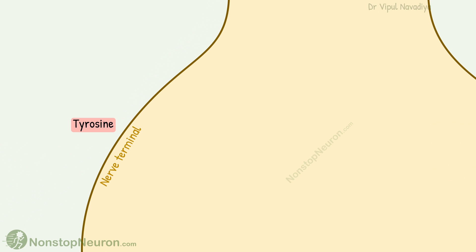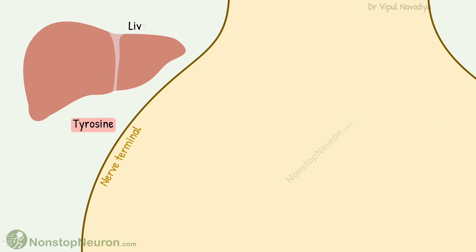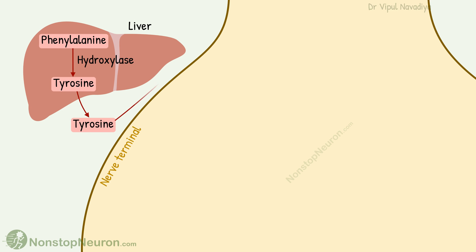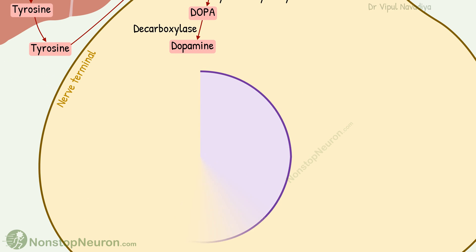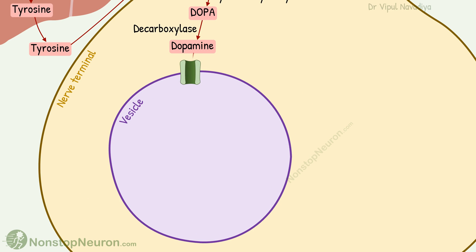Everything starts with tyrosine. It is synthesized in the liver from the amino acid phenylalanine by tyrosine hydroxylase. In the adrenergic neuron, it is taken up by active transport into the cytoplasm, where the enzyme tyrosine hydroxylase converts tyrosine into DOPA. The DOPA is then converted into dopamine by decarboxylase.